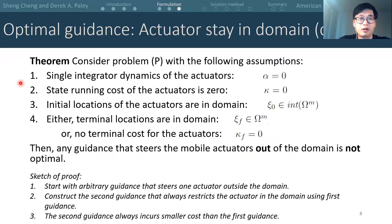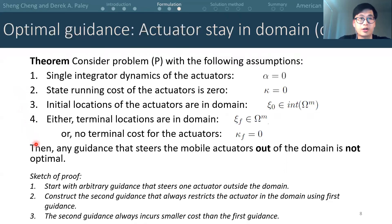Here's the theorem. Consider problem P with the following assumptions. First, the actuators have single integrator dynamics. Second, the state running cost in the mobility-related cost is zero. Third, the initial locations of the actuators are in the domain. And fourth, either the terminal locations are inside the domain, or the terminal cost is zero for the actuators. Then we can show that any guidance that steers the mobile actuators outside the domain is not optimal. By contraposition, this is equivalent to saying that under these assumptions, an optimal guidance can restrict the actuators within the spatial domain.